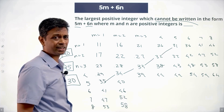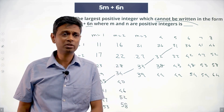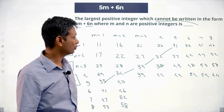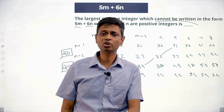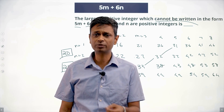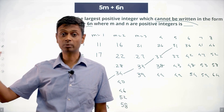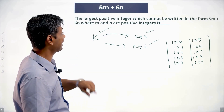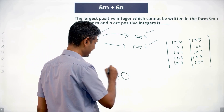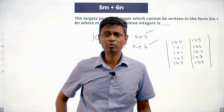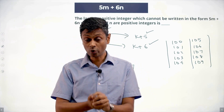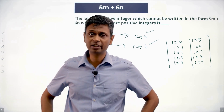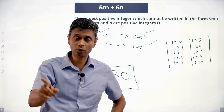31 is possible, 32 is possible, 33, 34, 35 — all possible. I'm through! 30 doesn't work, but 31 to 35 all work. Adding 5: 36–40 work, 41–45 work, 46–50 work — from 31 onward every number is possible. Just before 31 we have 30 which is not possible. The largest number that cannot be written in the form 5m plus 6n is 30.